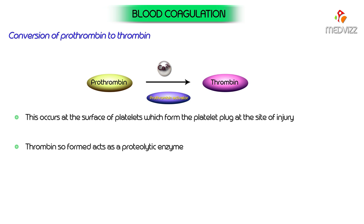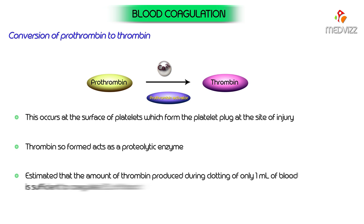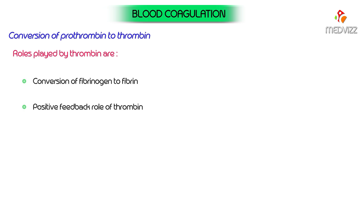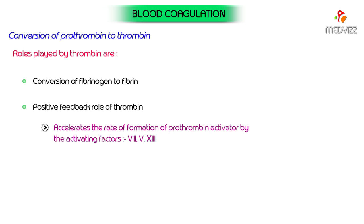Thrombin acts as a proteolytic enzyme. It has been estimated that the amount of thrombin produced during clotting of only one ml of blood is sufficient to coagulate three liters of blood. Roles played by thrombin include: conversion of fibrinogen to fibrin, and a positive feedback role — thrombin accelerates the rate of formation of prothrombin activator by activating factors 8, 5, and 13, thereby causing further conversion of prothrombin to thrombin. It also activates protein C.